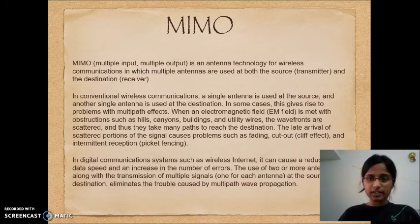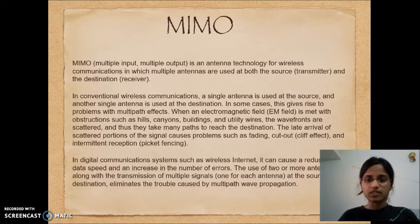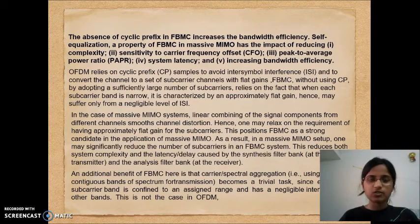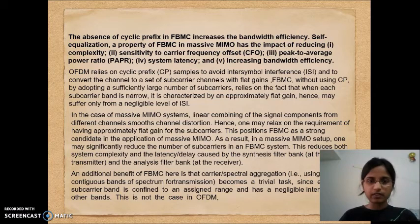In MIMO systems, MIMO is an antenna technology for wireless communication in which multiple antennas are used both at the source and the destination. Multipath propagation in digital communication systems causes reduction in data speed and increase in errors. The use of two or more antennas with multiple signals eliminates the trouble caused by multipath propagation. OFDM relies on cyclic prefix samples to avoid inter-symbol interference and converts the channel to a set of subcarriers with flat gains. FBMC, without using a cyclic prefix, adopts a large number of subcarriers, relying on the fact that when each subcarrier band is narrow, it is characterized by an approximately flat gain, hence suffers from a negligible level of ISI. This positions FBMC as a strong candidate in the application of massive MIMO.